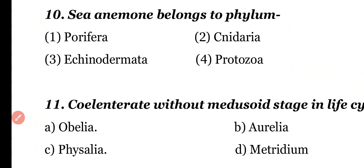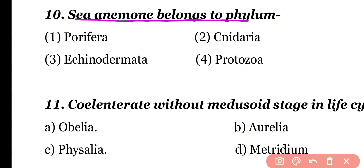Question number 10: Sea Anemone belongs to the phylum: Porifera, Cnidaria, Echinodermata, or Protozoa. Correct answer is option 2. Sea Anemone belongs to Phylum Cnidaria or Coelenterata, and its class is Anthozoa.